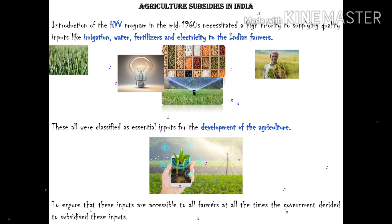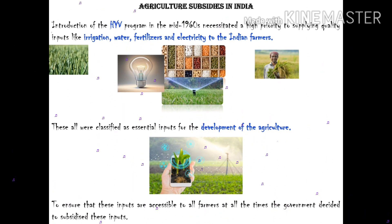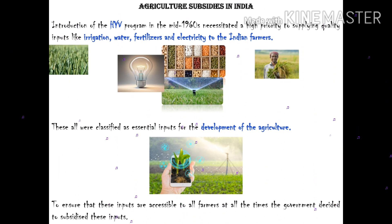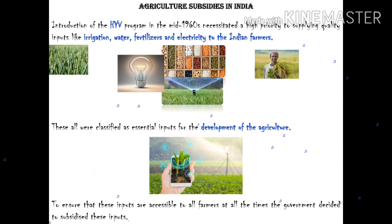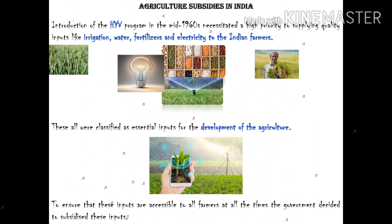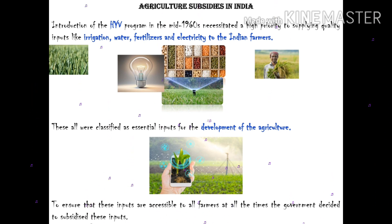Agriculture subsidy in India was only introduced around 1960, during our Green Revolution era. A high yield variety program was released, giving high priority to supplying quality inputs like irrigation water, fertilizer, and electricity to Indian farmers.